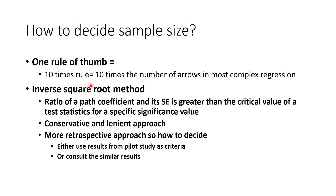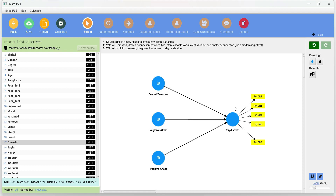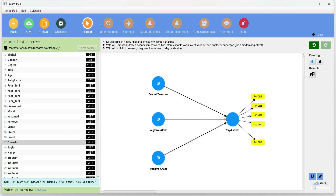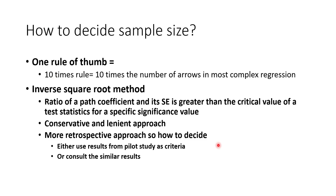In addition to power tables or power analysis programs like G-Power, another often-cited formula is the 10 times rule. This means we count the number of arrows going into the most complex regression in our model and multiply by 10. For instance, in our model the endogenous DV has the most arrows coming towards it — 3 arrows — so the minimum sample size would be 30. However, this rule is criticized because it does not consider statistical power of the model.